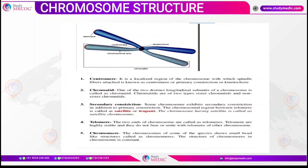If a secondary constriction is present, the region of the chromosome between the telomere and the secondary constriction is known as a satellite. Telomeres are the ends of chromosomes, which are highly stable and do not fuse or unite with telomeres of other chromosomes. Chromomeres are bead-like structures seen on chromosomes of some species, and their structure in a chromosome remains constant.